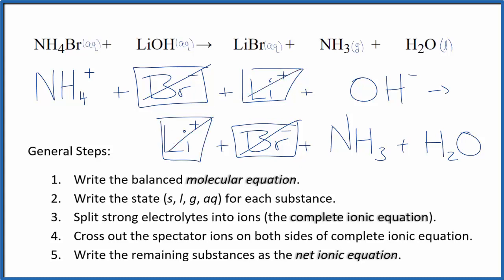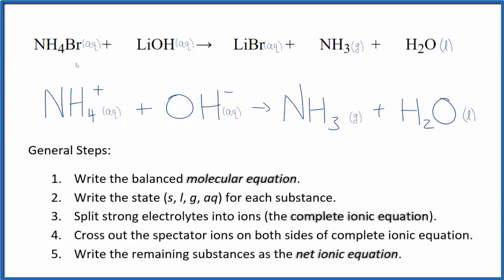And what's left is the net ionic equation for NH4Br plus LiOH. I'll clean this up, write the states. We'll have our net ionic equation. So this is the balanced net ionic equation for ammonium bromide plus lithium hydroxide.